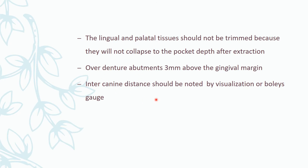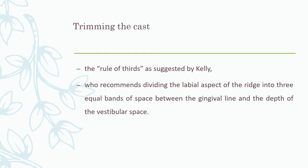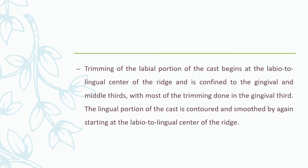If doing an overdenture, the abutments need to be three mm above the gingival margin. The inter-canine distance should be noted, measured with a gauge, and recorded. Trimming the cast follows Kelly's rule of thirds, which recommends dividing the labial aspect of the ridge into three equal bands of space between the gingival line and the depth of vestibular space.